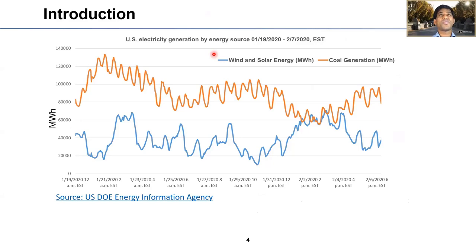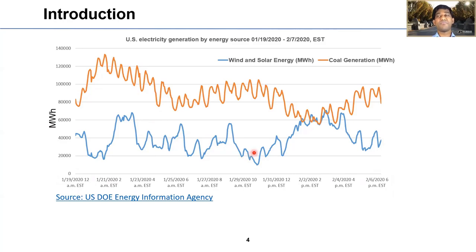As we all know, solar and wind are intermittent renewable sources and depend on weather conditions. The penetration of these intermittent renewables causes fluctuations in the power generation from fossil fuel-based power plants like coal and natural gas plants. As you see in this chart, we look at two weeks of data from January 19th to February 6th, 2020, examining how these external load fluctuations affect the operations of fossil fuel power plants and communities for electricity.